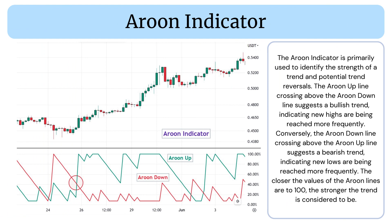The Aroon Indicator is primarily used to identify the strength of a trend and potential trend reversals. The Aroon Up line crossing above the Aroon Down line suggests a bullish trend, indicating new highs are being reached more frequently. Conversely, the Aroon Down line crossing above the Aroon Up line suggests a bearish trend, indicating new lows are being reached more frequently. The closer the values of the Aroon lines are to 100, the stronger the trend is considered to be.